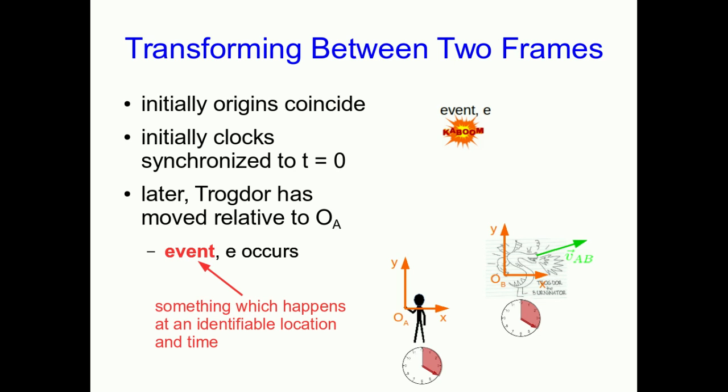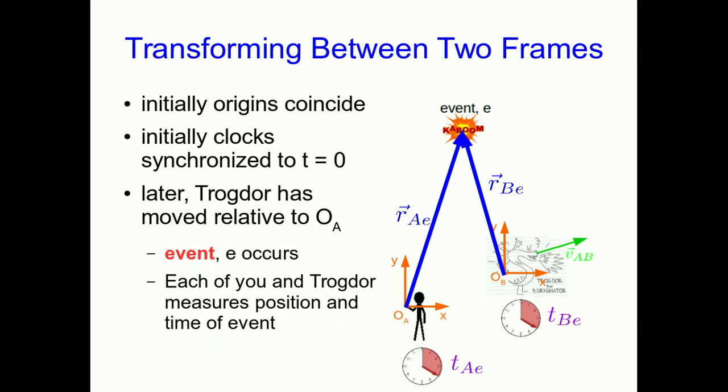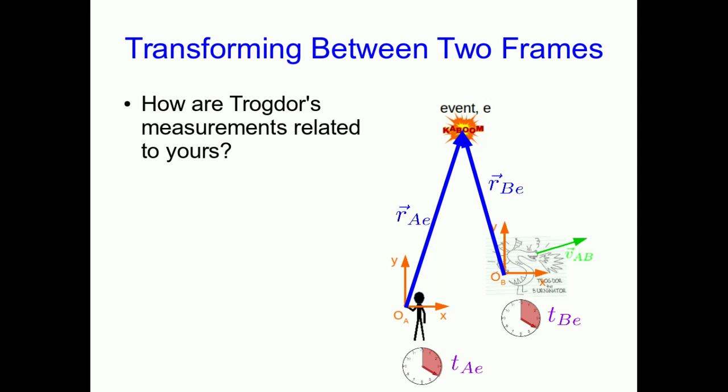What is an event? What do I mean? It's just anything which happens which has an identifiable location and time, so I've drawn it as something like a firecracker going off, but it could be anything where we can specify when it happened and where it happened. You and Trogdor can now make measurements of the position and time of that event, and what we're interested in is how Trogdor's measurements relate to yours.